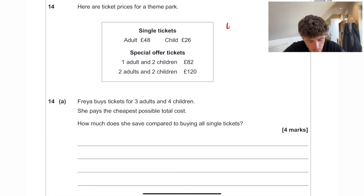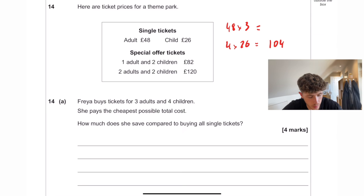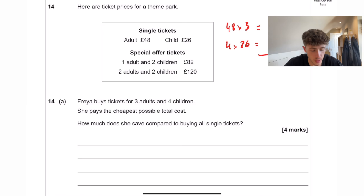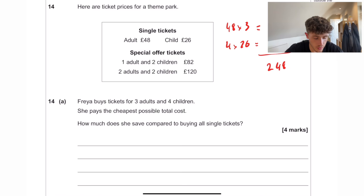So three adults, so 48 times 3, and 26 for children, so 4 times 26. If we add both of those up, we're going to get 104 and 144, which means if we add those together, it's going to be £248.